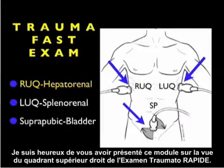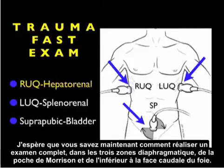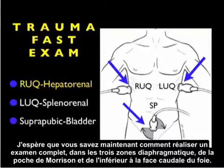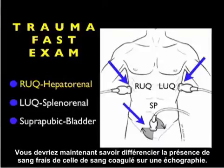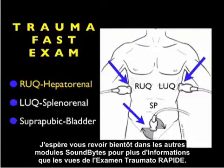In conclusion, I'm glad to share this part two module on the right upper quadrant view of the trauma fast exam. I hope you now have a better understanding of how to perform a complete exam looking at the three areas: infradiaphragmatic, Morrison's pouch, and the inferior tip of the liver. And hopefully you'll now be able to discern fresh blood versus clotted blood on bedside sonography. I hope to see you back as we continue through the other views of the trauma fast exam.